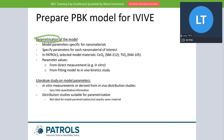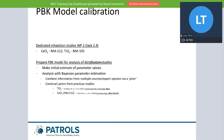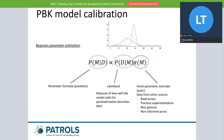We will then estimate the parameters so that the model prediction and the data fit the best. The method for doing parameter distribution is Bayesian parameter estimation. Bayesian means you usually start with prior knowledge of these parameters and improve them as you fit the model to the data.